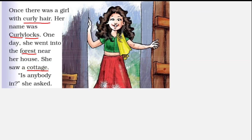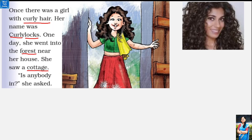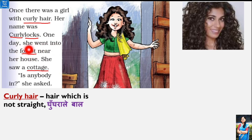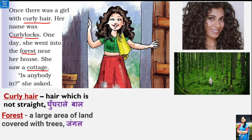Once there was a girl with curly hair. Ek baar ek ladki thi jiske ghungrale baal the. Curly hair matlab jiske baal ghungrale hoon. Her name was Curly Locks. One day, ek din, she went into the forest - she went matlab wo gayi. 'Went' is the past tense of 'go'. Into the forest - jungle mein gayi.